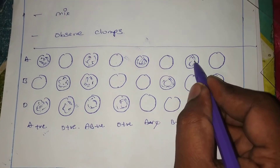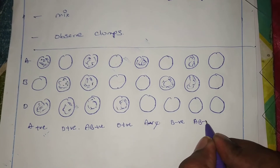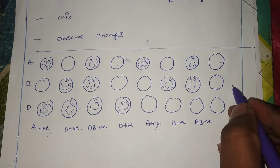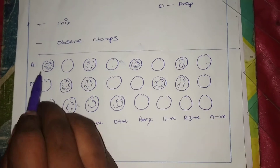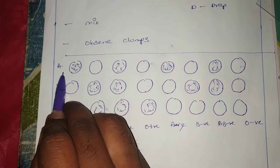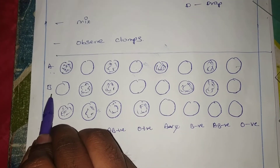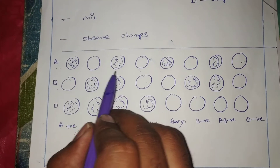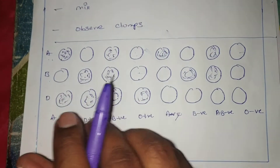If A is present and B is present but D is not there, that is AB negative. If A is not there, B is not there, and D is not there, that is O negative. So: if agglutination is present only in A, that is blood group A; if present only in B, that is blood group B; if present in both A and B, that is AB; if not present in A or B, that is O blood group.